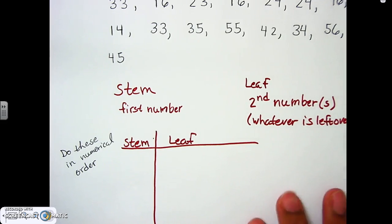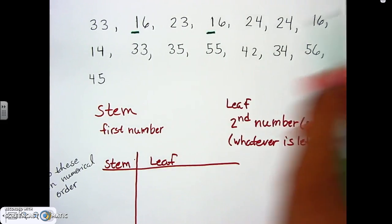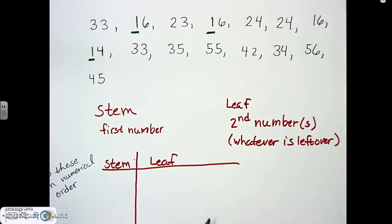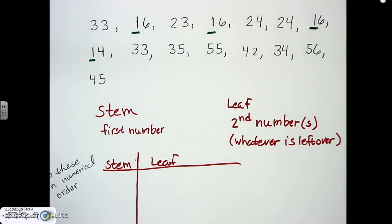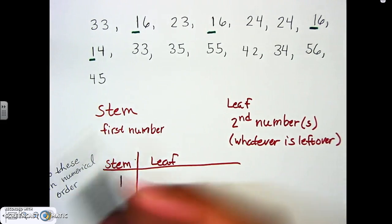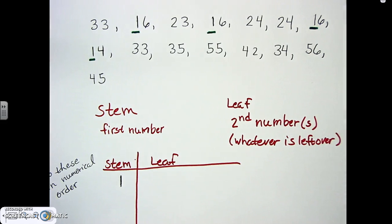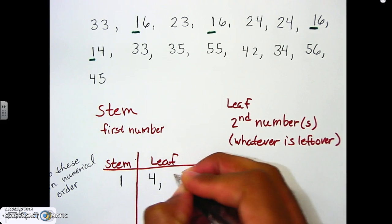Starting with our stems, we begin with the lowest, which are the ones. We have 16, 16, and 14 — and that other 16 too. So those are the only numbers starting with one. The stem is 1, and the leaves are just the digits left over: 4, 6, 6, and 6. These must be in numerical order, so we put the four first, then six, six, six.